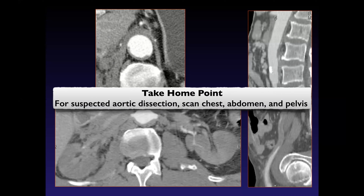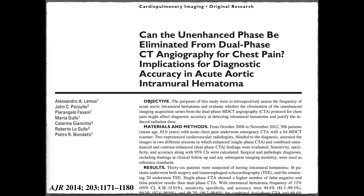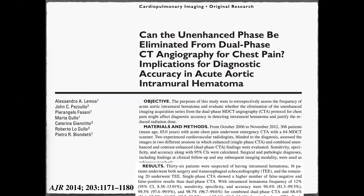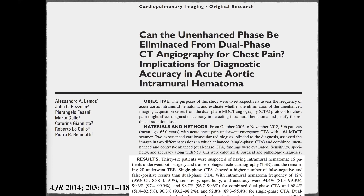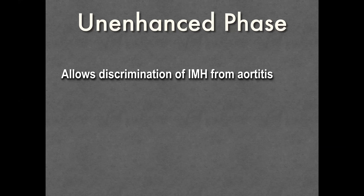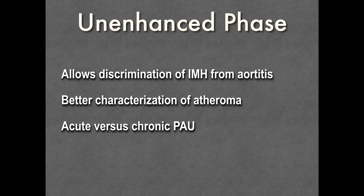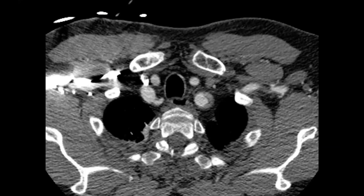An article addressed whether an unenhanced scan could be eliminated from CT angiography when there is concern for intramural hematoma. In a study of 36 patients, diagnostic performance was inferior for a single-phase versus dual-phase scan. The unenhanced phase allows discrimination of intramural hematoma from atheroma and aortitis, better characterization of atheroma, and helps distinguish acute versus chronic penetrating ulcer. Both extension of the scan into the abdomen and pelvis, and the use of unenhanced scans, are important protocol considerations for assessing acute aortic syndrome.